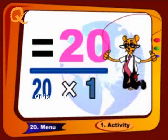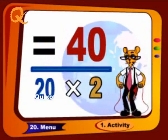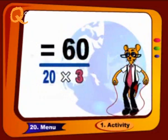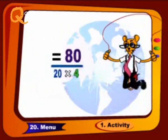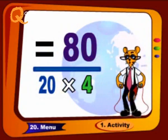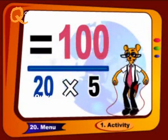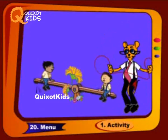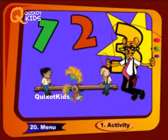Twenty 1s are 20, twenty 2s are 40, twenty 3s are 60, twenty 4s are 80, twenty 5s are 100. Now we will complete the remaining table.